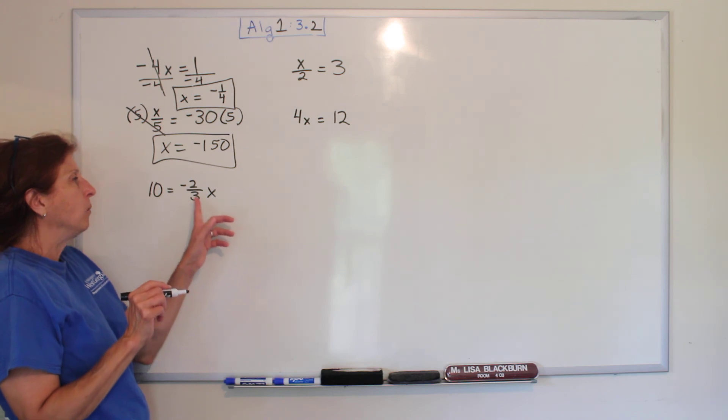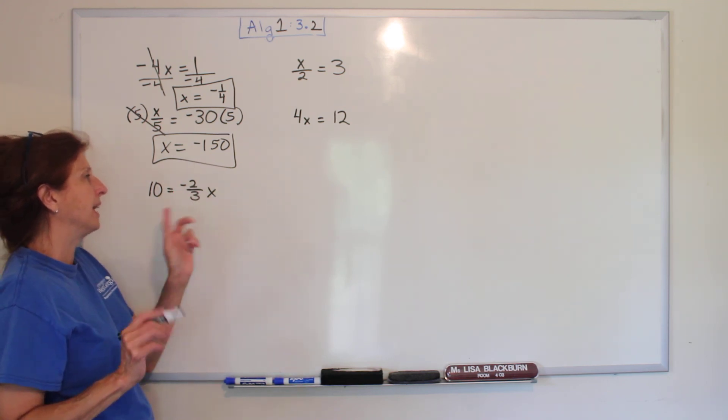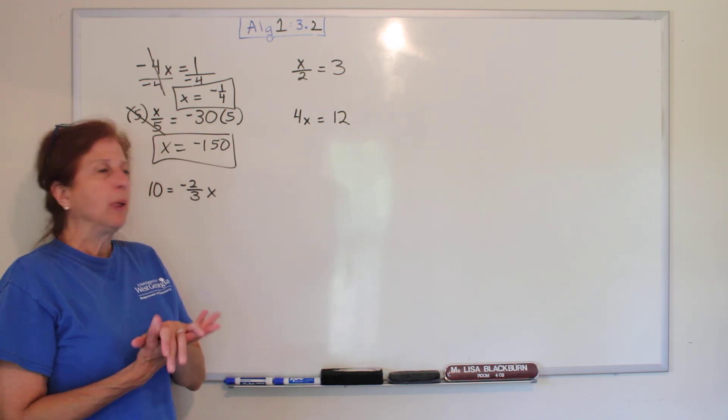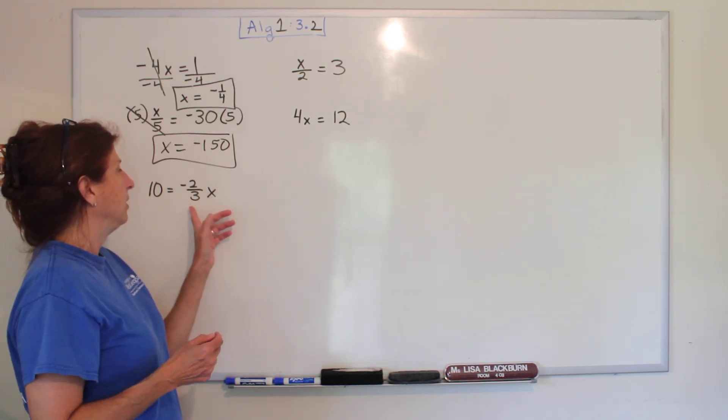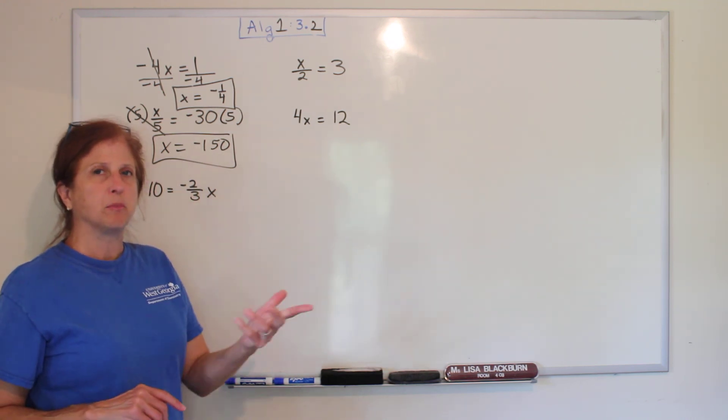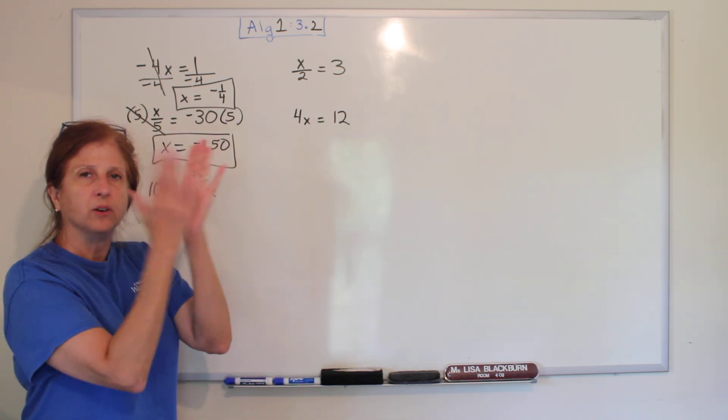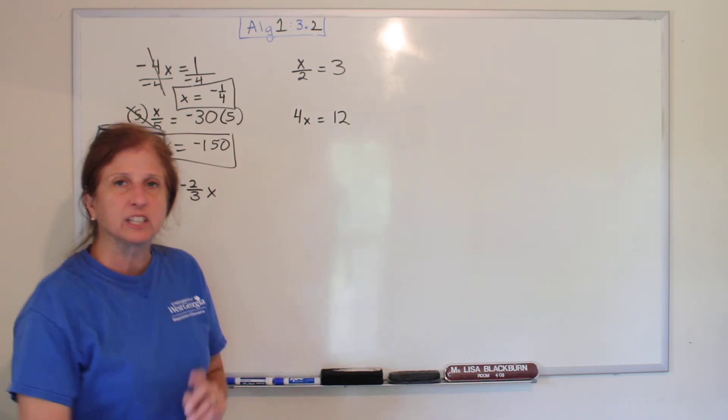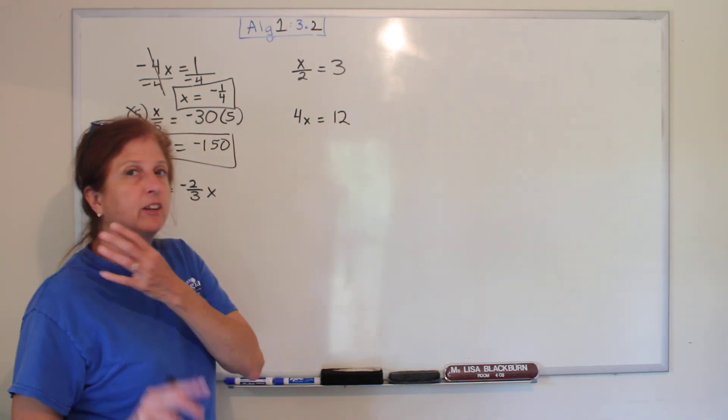Alright, how about this one? Well, x is being multiplied by negative two thirds. And if you remember your sixth grade math, the opposite of multiplying by a fraction is dividing by a fraction. And to divide a fraction, you flip it and multiply. But students seem to get that wrong. They seem to get confused.